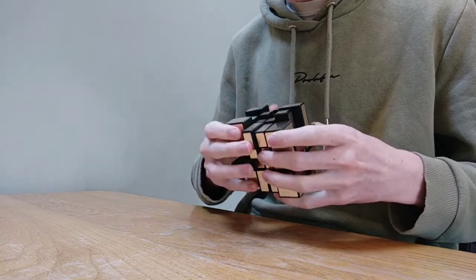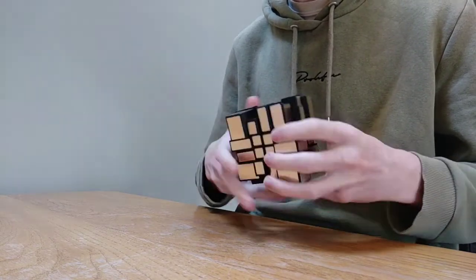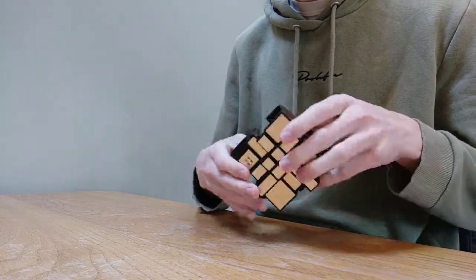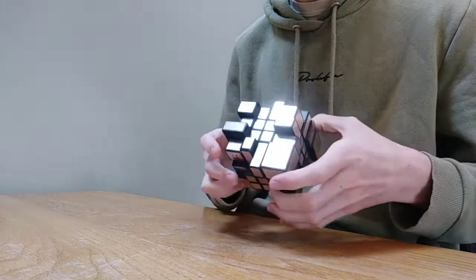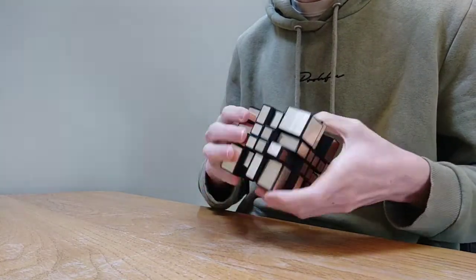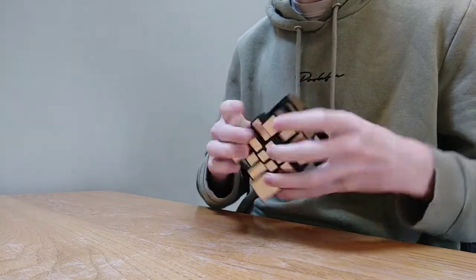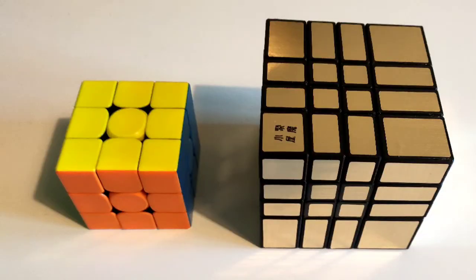The cube was made by taking a standard 4x4 and then adding 3D printed extensions to the pieces to make it a mirror cube. This means that the cube is very big because it's a 4x4 plus all the extensions. Here it is compared to a 3x3.